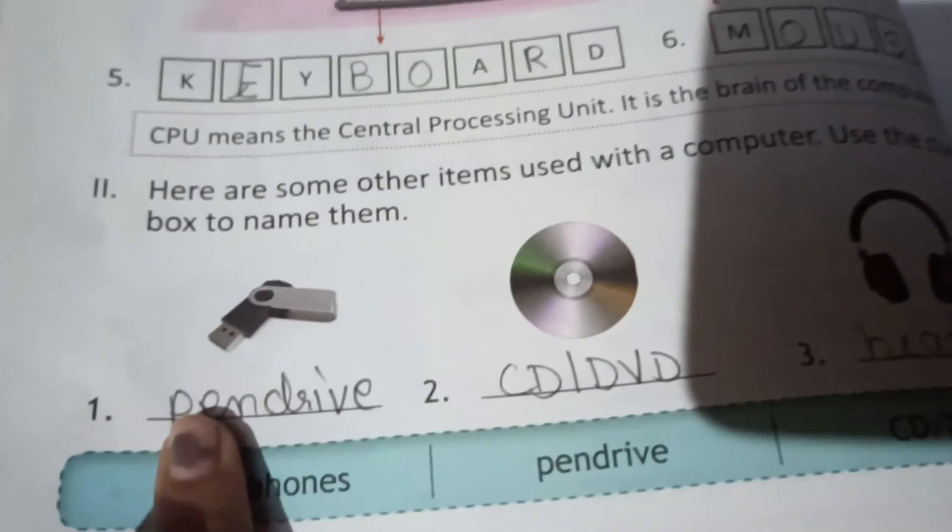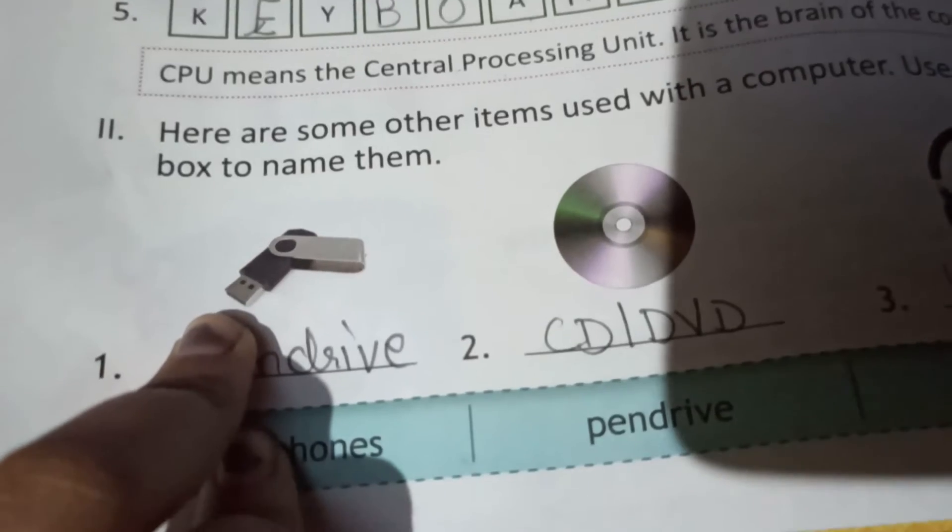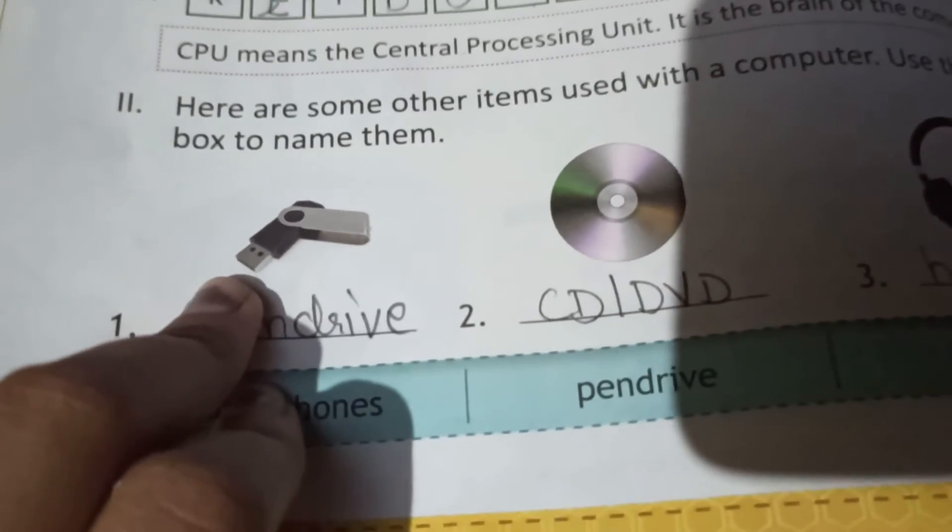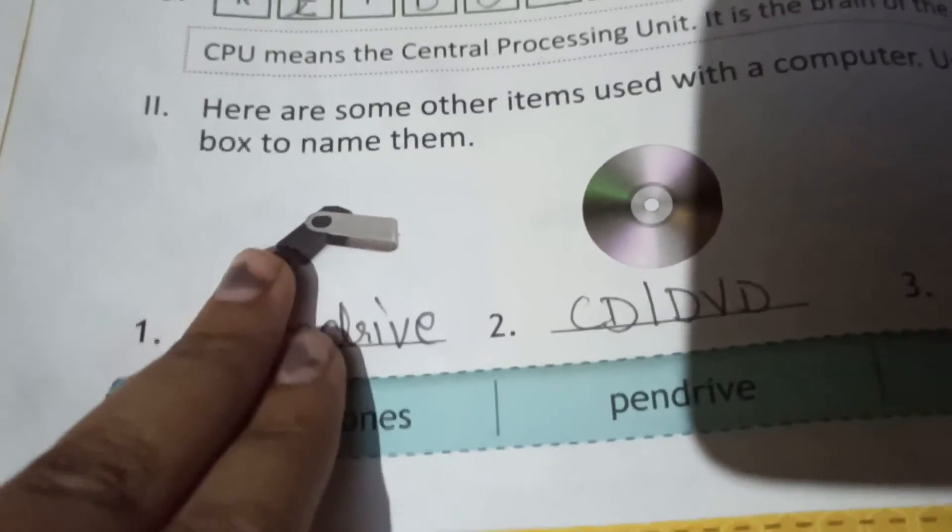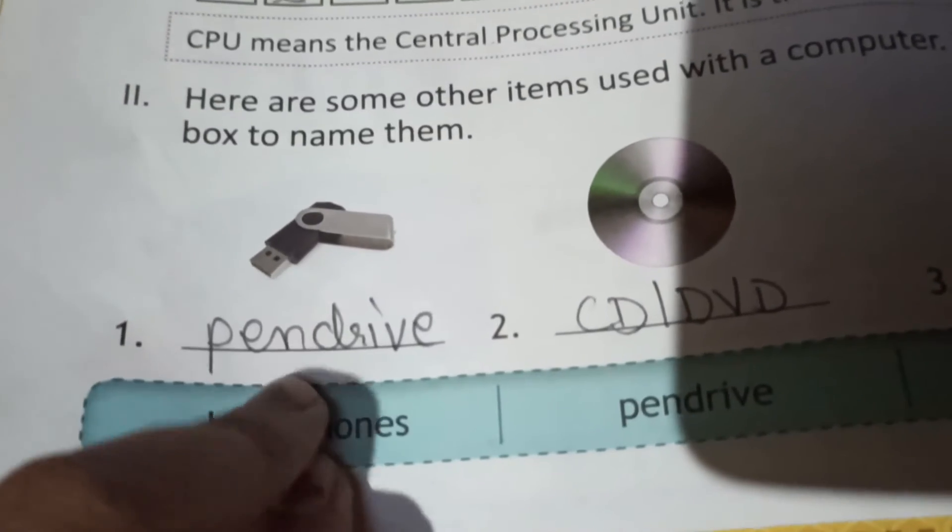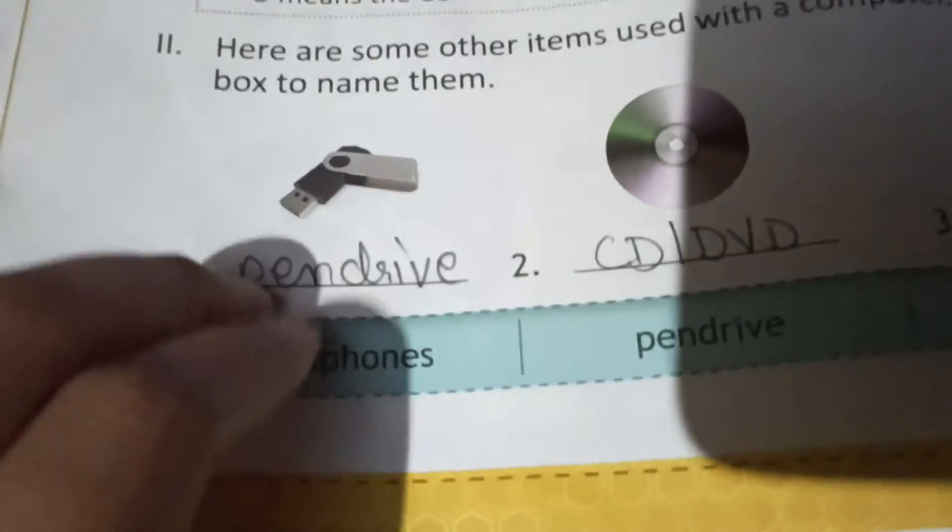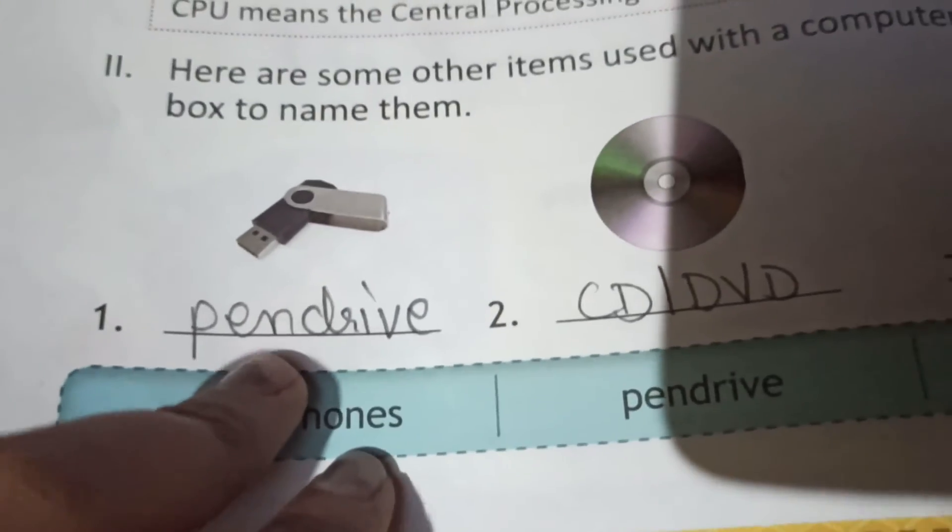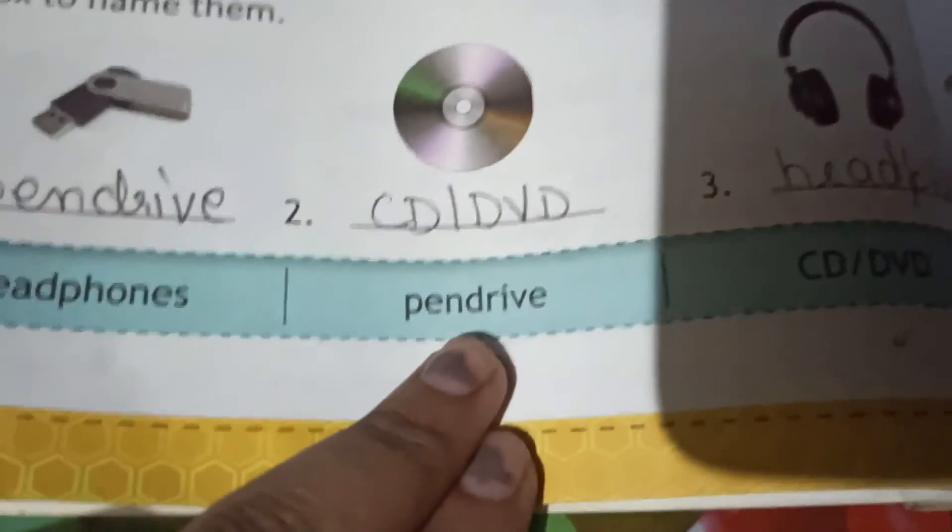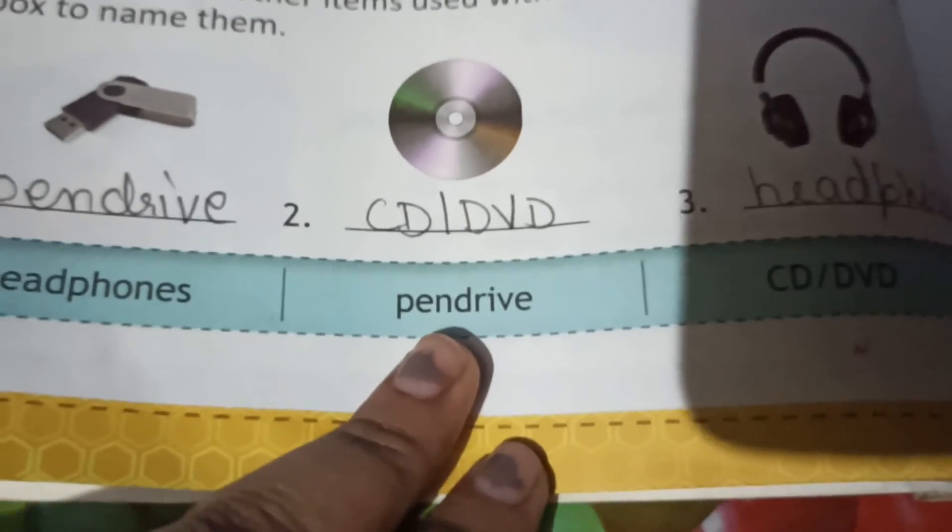First one is pen drive. यह एक external device है जो हम computer में connect कर सकते हैं, जिसमें हम अपना data store कर सकते हैं. यह क्या होती है? Pen drive. इसको हम short form में PD भी कहते हैं. Spelling of pen drive is P-E-N-D-R-I-V-E, pen drive.